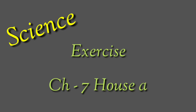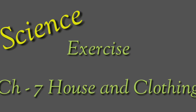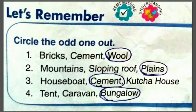Hello dear students, here we are going to discuss the exercise part of Chapter 7: House and Clothing. The first exercise is 'Let's Remember.' In this question, you have to circle the odd one out — means नीचे जो दिया गया है उसमें आपको जो odd है, means अलग है, उसको हमें circle करना है.